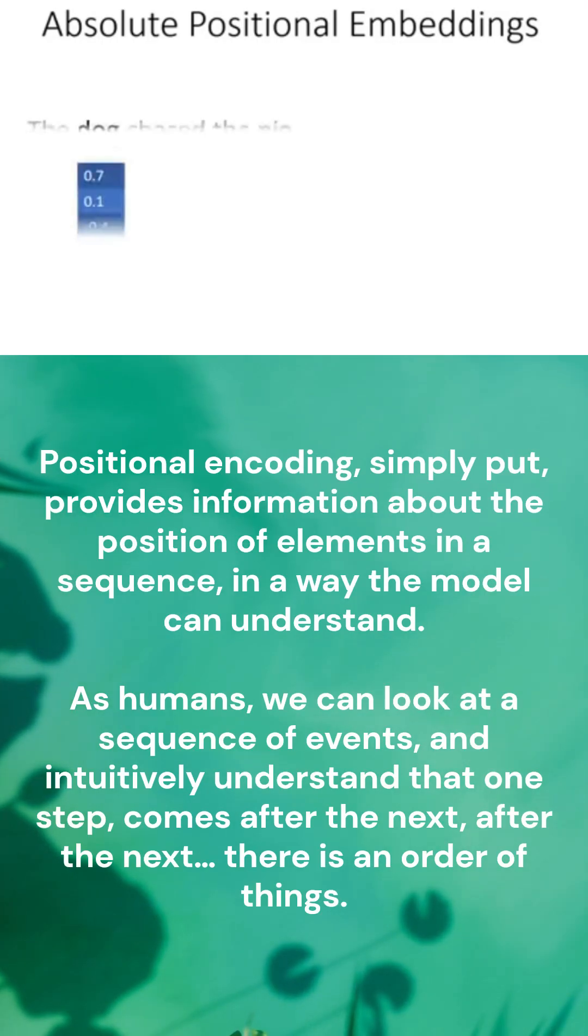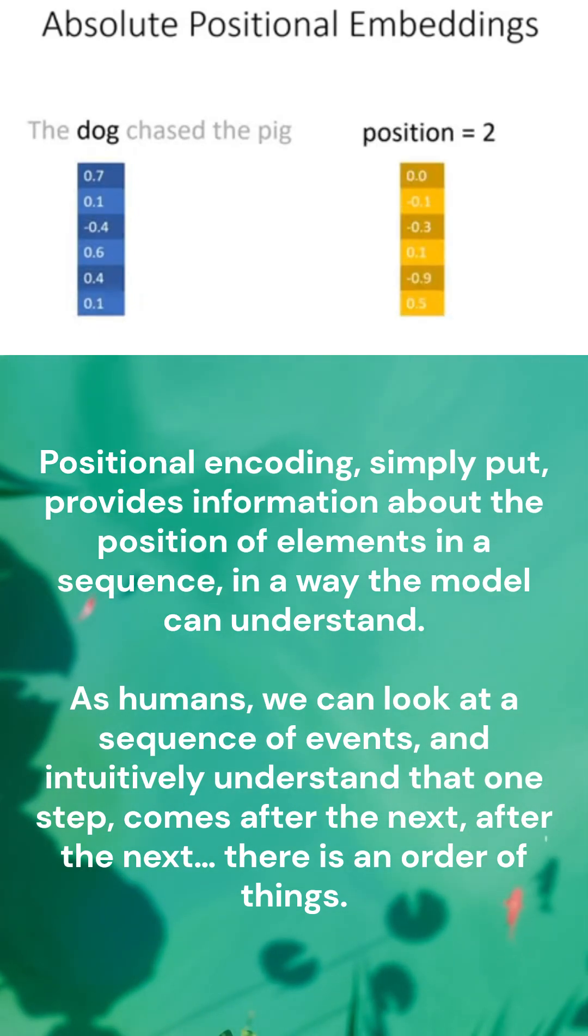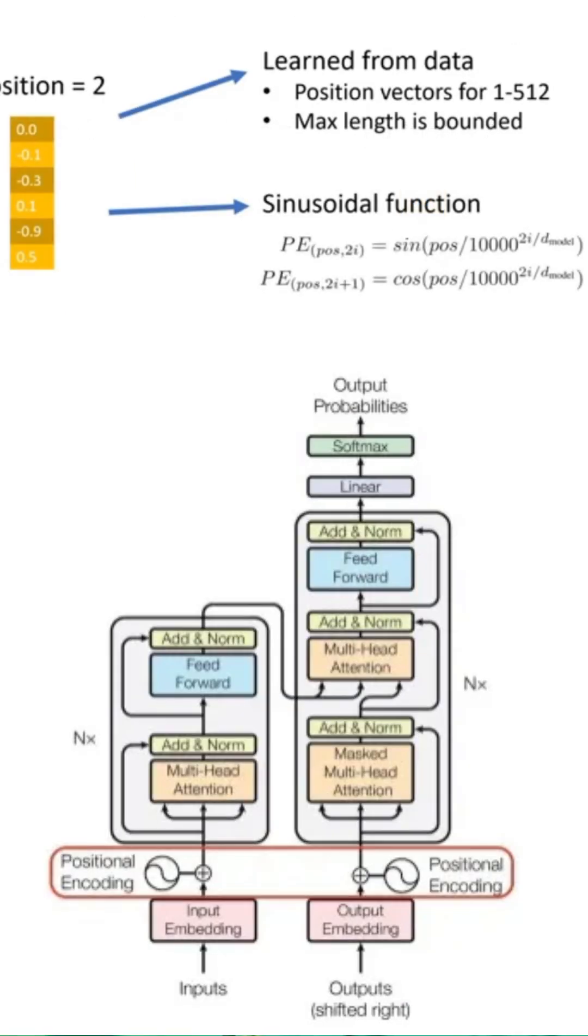Traditionally, linear systems have used absolute positional embeddings which encode the absolute positions from one to the maximum sequence length with a learnable embedding vector at each position. This method is used to model how a token at one position attends to another token at a different position, where a sinusoidal function is most frequently used.